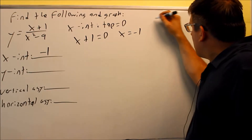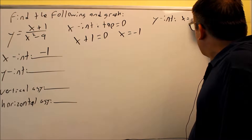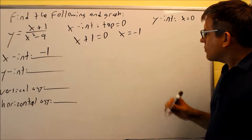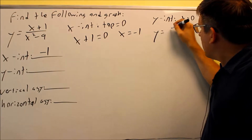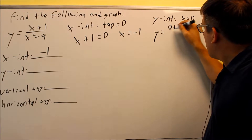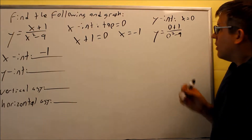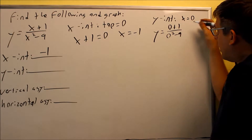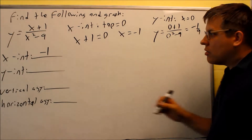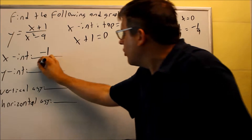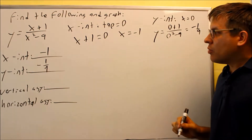Now we want to find the y-intercept. The y-intercept is where you put in 0. Using the original equation: 0 plus 1 over 0 squared minus 9. When I simplify that, I get negative 1 ninth. So negative 1 ninth is my y-intercept.